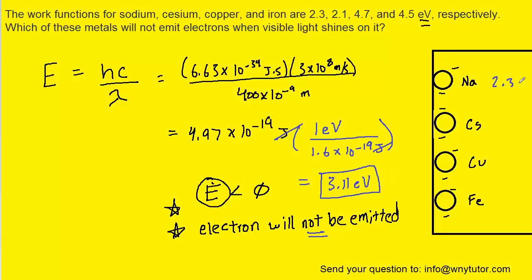Let's look at the work functions. We have sodium, cesium, copper, and iron. Now we can compare this energy with those four work functions. We can see that 3.11 electron volts is less than the work function for copper and less than the work function for iron. For those two metals, copper and iron, their electrons will not be emitted when visible light shines on them. So the correct answer is copper and iron.